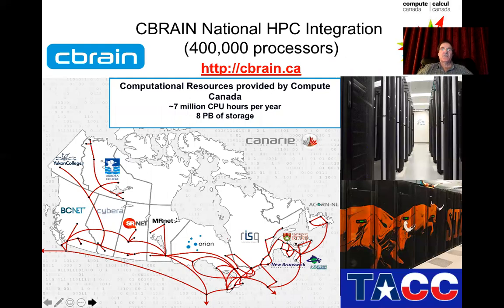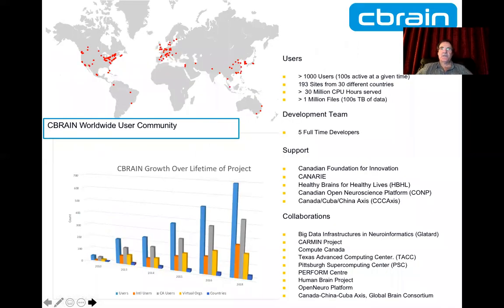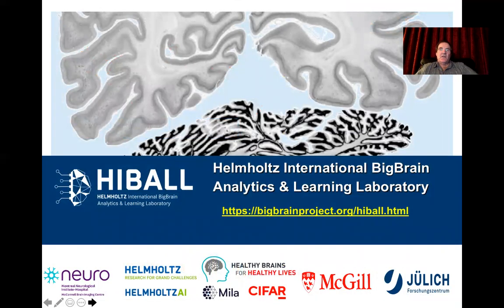To support all of this work, one has to get access to major computational resources. We're using the C-Brain platform across the country, which has 400,000 processes. It's also open to international partners — the Texas Advanced Computing Center is also a node on the C-Brain network. C-Brain supports over a thousand users in 30 different countries, and I invite people who would like to learn more to contact us or go onto the C-Brain website to log in. One of the partners C-Brain supports is the Helmholtz International Big Brain Analytics and Learning Laboratory, and some of the work I've been describing has significant relevance within the Highball project.